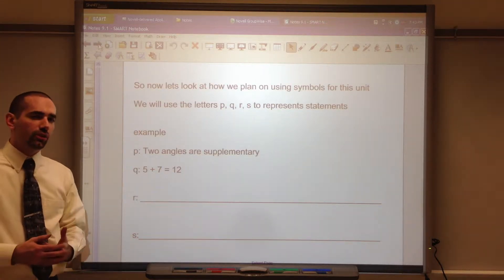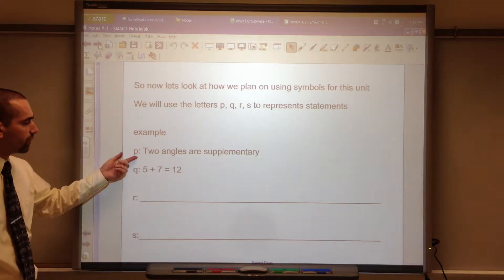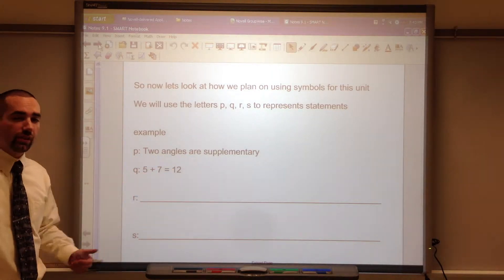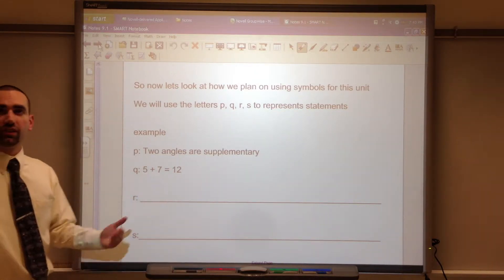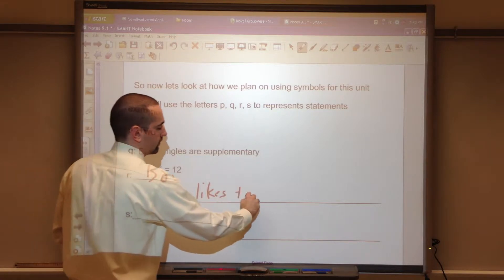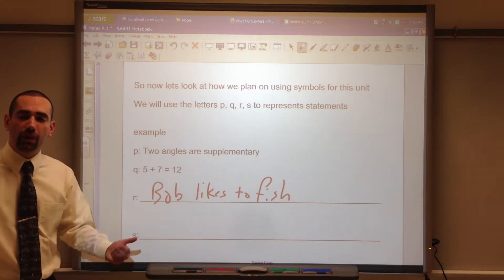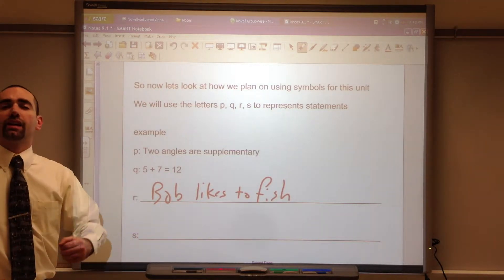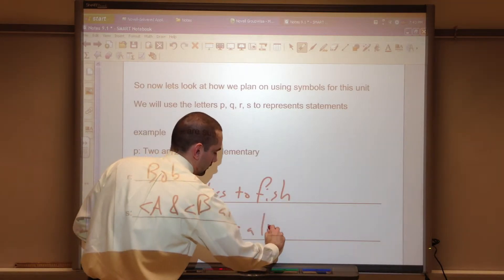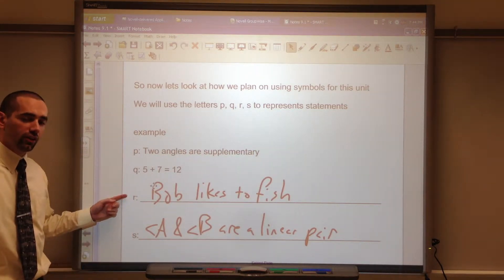So let's look at how we plan on using symbols for this unit. We'll use the letters P, Q, R, S to represent statements. Here, P, the letter P, represents the statement two angles are supplementary. Q represents the statement five plus seven equals twelve. R represents Bob likes to fish. Another statement, let's do something mathematical. Let's say angle A and angle B are a linear pair. They're just statements represented by letters R and S.